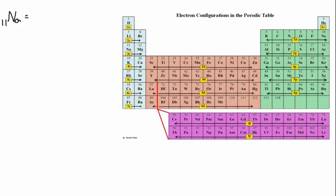The first example we're going to work on is the first element in the periodic table on the third row going across, and that's going to be sodium. So we're working on sodium. Sodium is element number 11, so 11 also tells me there are 11 electrons that I need to find a home for.